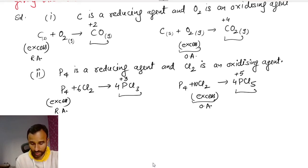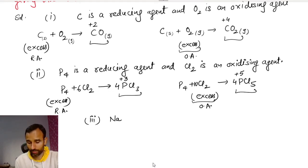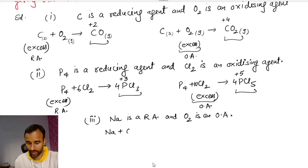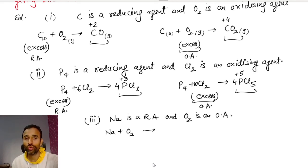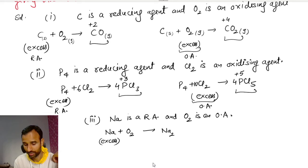Now for the third illustration, let us take sodium and oxygen. Sodium is a reducing agent and O₂ is an oxidizing agent. When sodium is treated with O₂, we get either sodium oxide or sodium peroxide. If sodium is in excess, then we get sodium oxide. If O₂ is in excess, we get sodium peroxide.